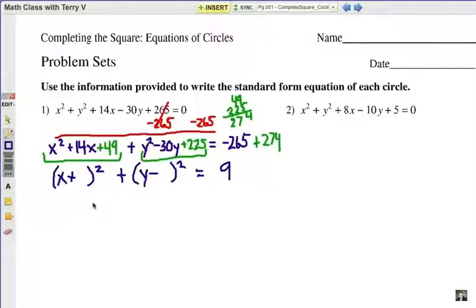Now we need to factor each group, and this involves thinking backwards here. Remember, to get the 49, we squared the 7, so it's got to be (x+7)² quantity squared. And the 225 came from 15 squared, actually negative 15 squared. So we're going to have a 15 there. Notice how we keep the negative sign. Now when I subtract, you get 9.